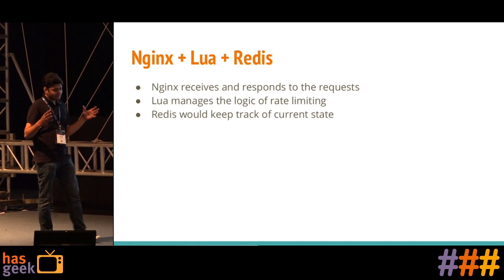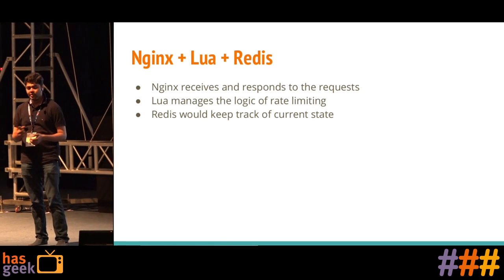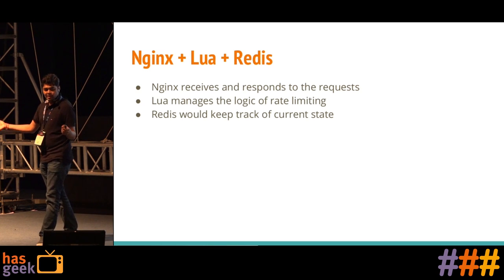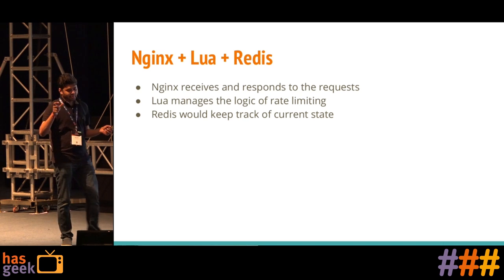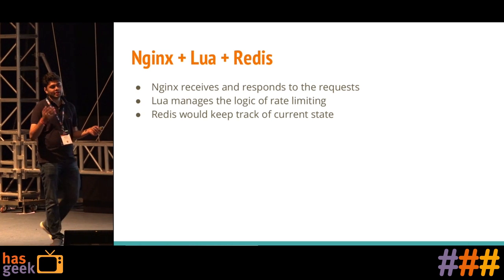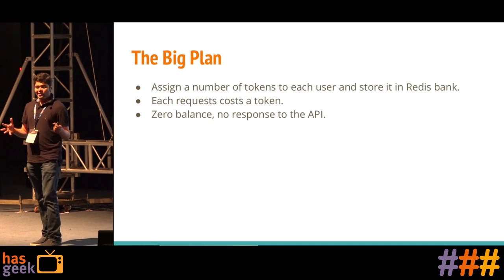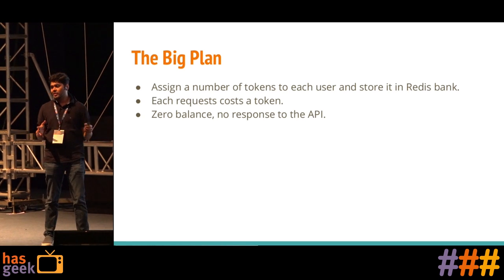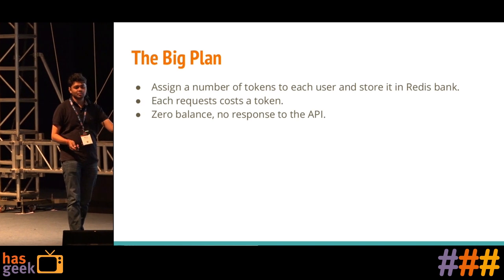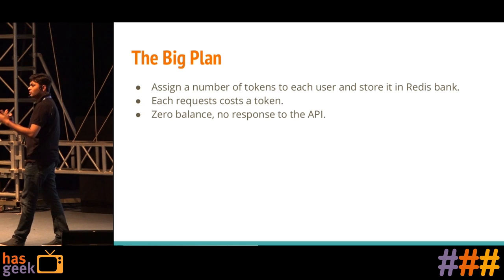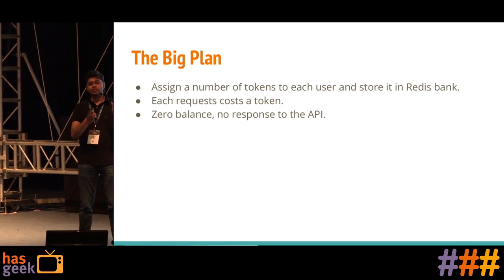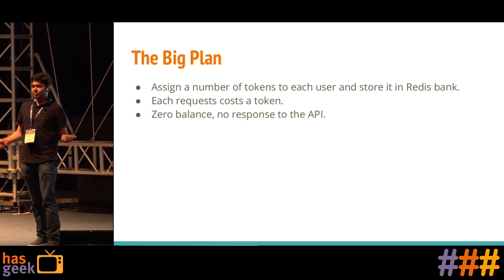My solution to this entire mess is to use Nginx plus Lua plus Redis. Nginx has a Lua plugin which is very awesome. You create a pipeline where Nginx will receive and respond to requests, and the Lua will maintain the logic of rate limiting — based on this key do something, based on that key do something. Redis will keep track of the current state: how many requests have been processed for this particular client and how many are left. The big plan is that in the beginning we assign a fixed number of tokens to each user and store it in the Redis bank. Each request will cost a certain amount of tokens — for simplicity each request costs one token. As people keep bombarding with requests, we keep deducting their token balance, and when the balance hits zero, we will not give them a response to their API unless the token balance is reset or restored after a minute or whatever window you choose.